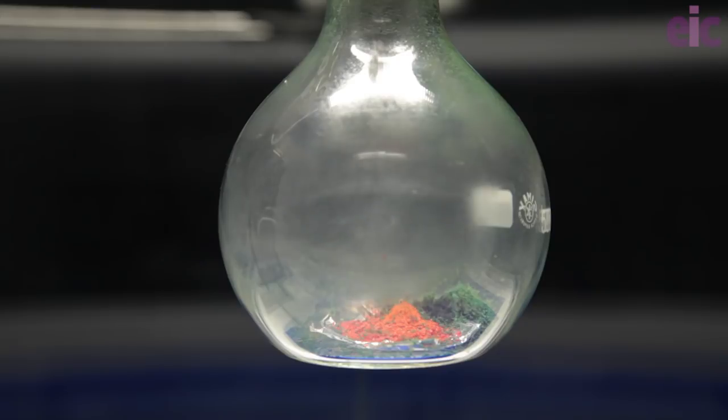All the hazardous solids is contained within the flask, making this so much easier to clean up than just leaving it out on the floor of the fume cupboard.